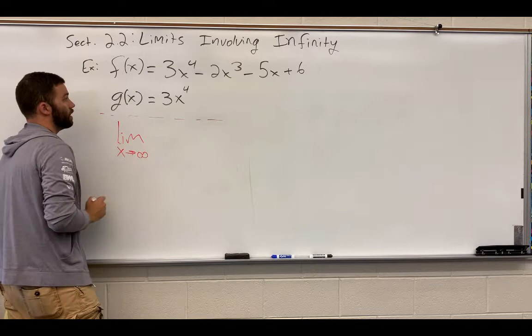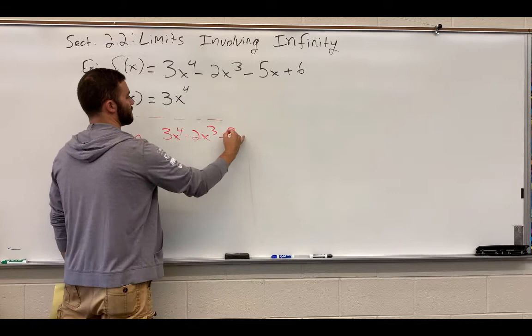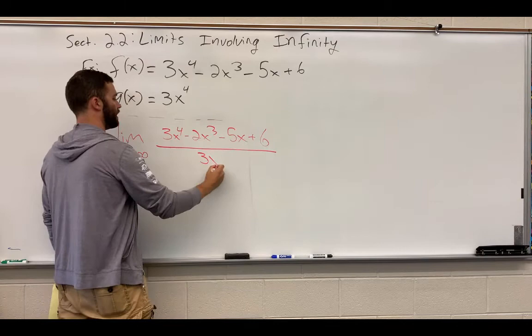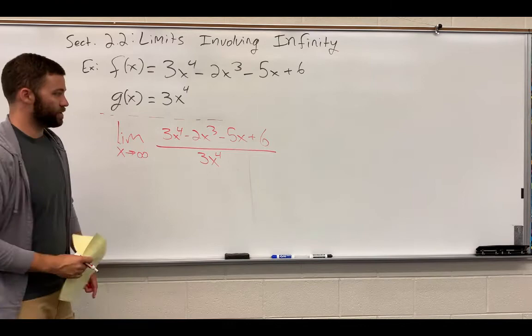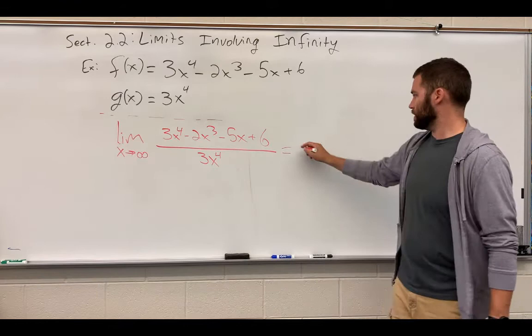So, we have the limit as x approaches infinity of f of x, that's 3x to the fourth minus 2x cubed minus 5x plus 6 divided by 3x to the fourth. At this point, it's maybe not obvious that this ratio, when we evaluate the limit, will equal one. So, let's do some algebraic manipulation to it and see if we can't make it clear.